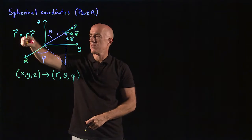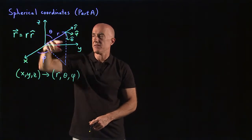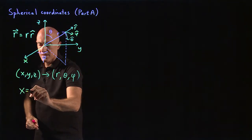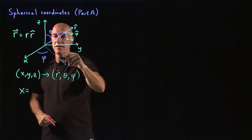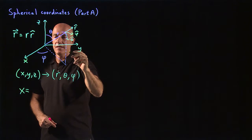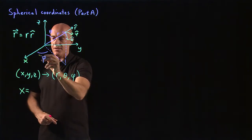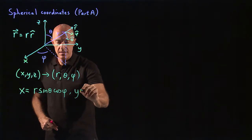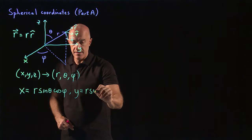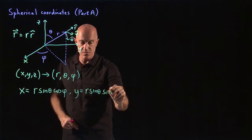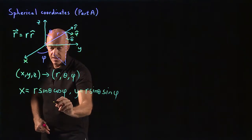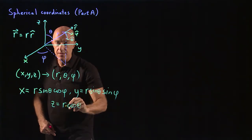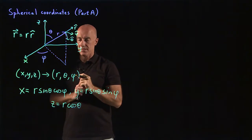The position vector can just be written as r r-hat, where r-hat is the direction of the position vector. So what is the transformation? We have x: r sine theta projects onto the x-y plane, and then cosine phi projects onto the x-axis, so x = r sine theta cosine phi. For y, you project onto the x-y plane — r sine theta — and then project onto the y-axis, which gives sine phi. And z will be r cosine theta — projection onto the z-axis.